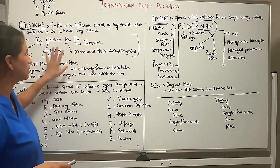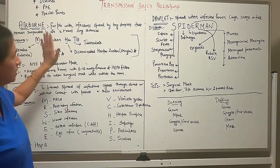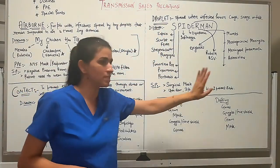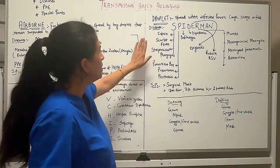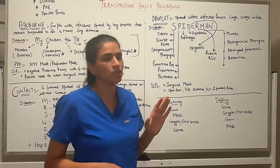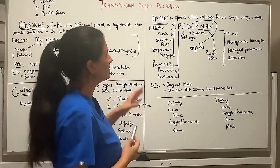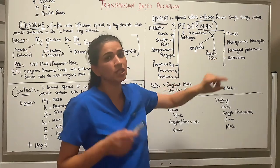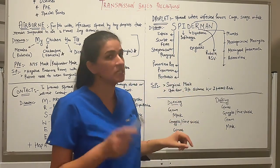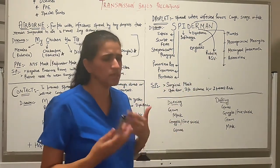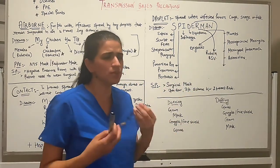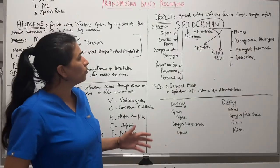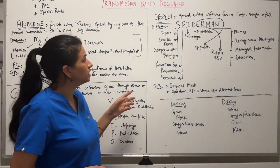Now let's compare with droplet precautions. In droplet precautions, infection spreads when an infected person coughs, sneezes, or talks — transmission occurs through mucus droplets traveling to another person.